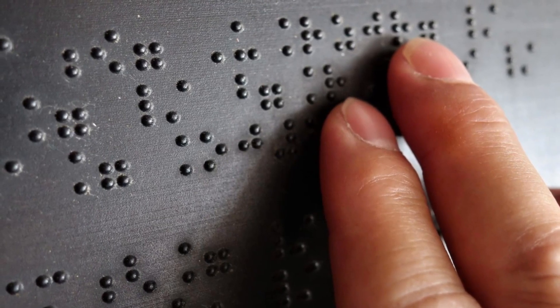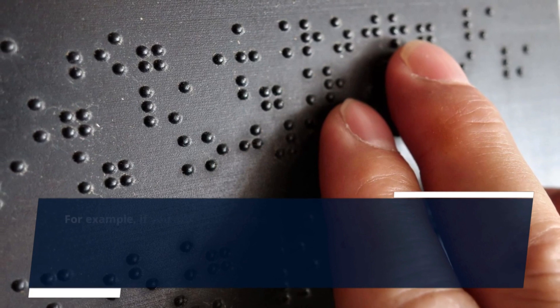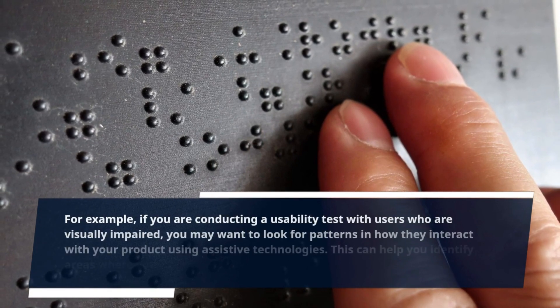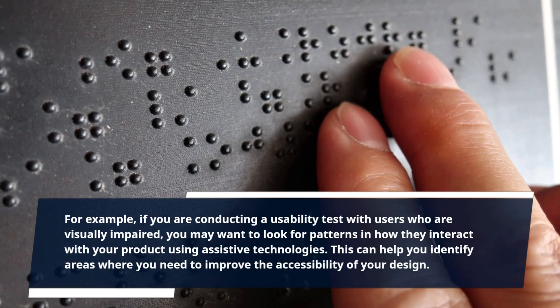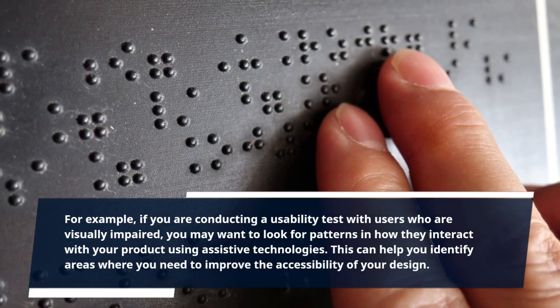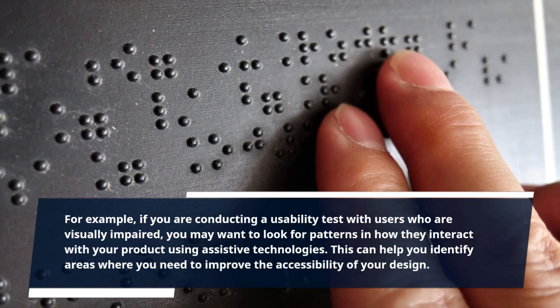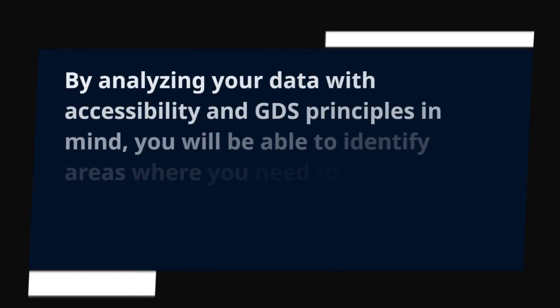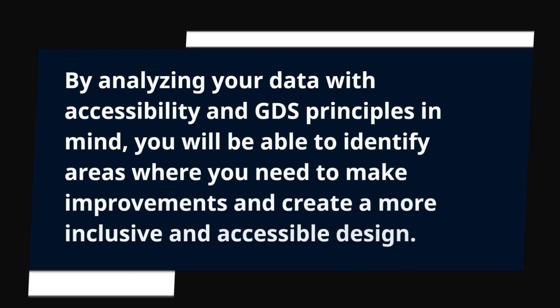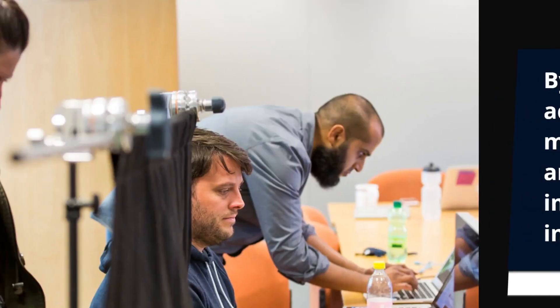For example, if you are conducting a usability test with users who are visually impaired, you may want to look for patterns in how they interact with your product using assistive technologies. This can help you identify areas where you need to improve the accessibility of your design. By analyzing your data with accessibility and GDS principles in mind, you will be able to identify areas for improvement and create a more inclusive and accessible design.